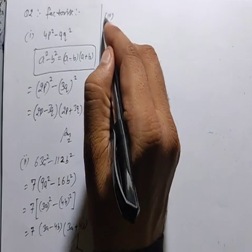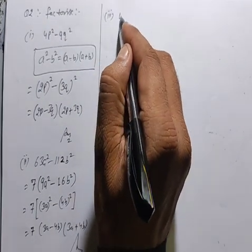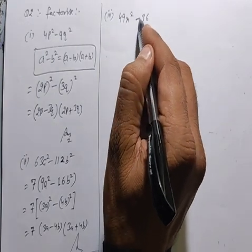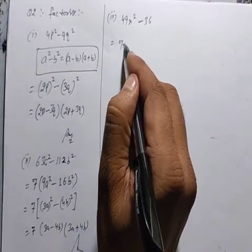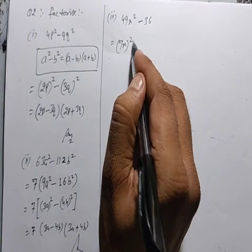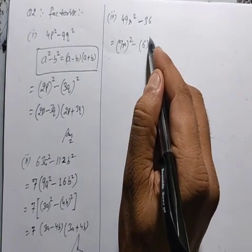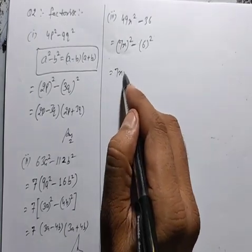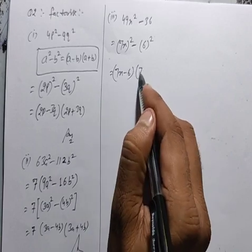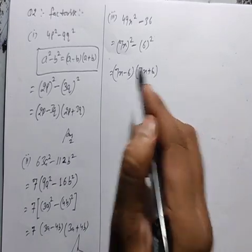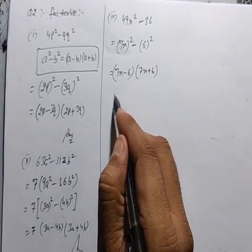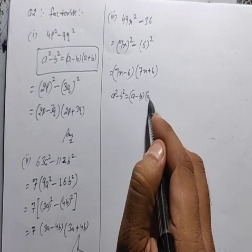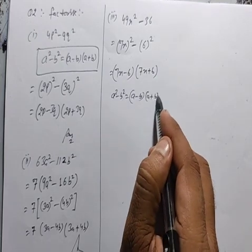Third part: 49X square minus 36। 49 = (7X) whole square, 36 = 6 whole square। A square minus B square identity: A minus B and A plus B। Answer: (7X - 6)(7X + 6)।